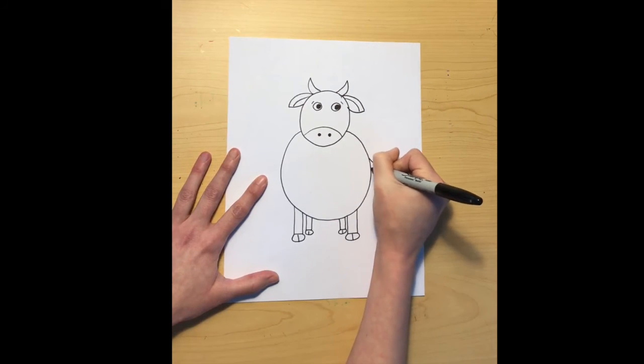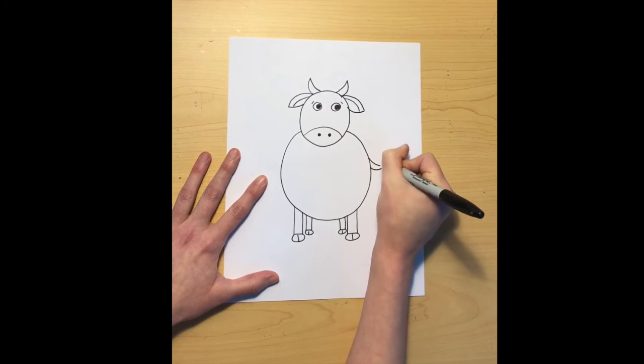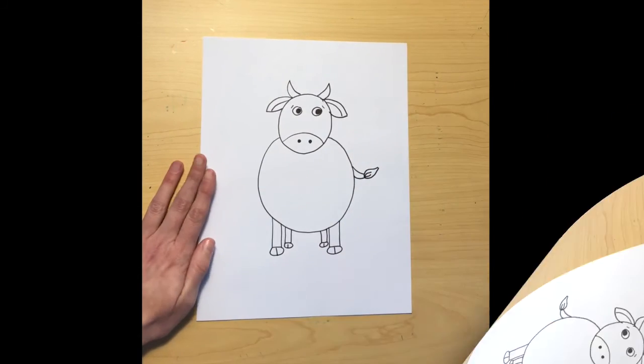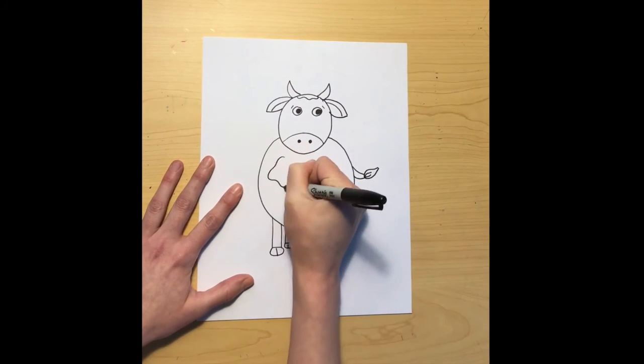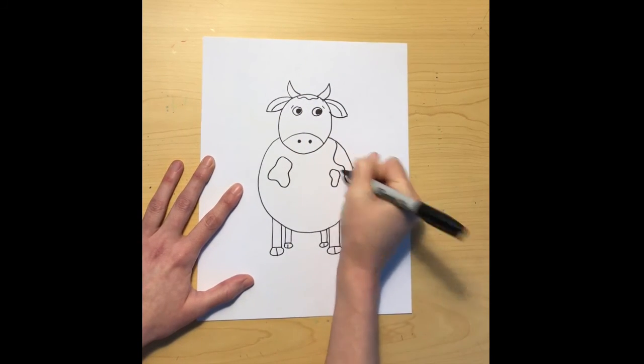Pick a side and add a tail. Remember two lines and kind of a teardrop shape. You can add in some hair lines and then add in your spots and color them in.